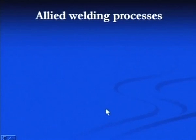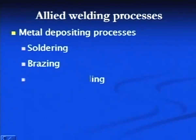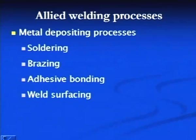Allied welding processes are those in which either a joint is produced or some sort of layer is developed at the surface to protect it from the environment or from wear and tear. These include metal depositing processes, soldering, brazing, adhesive bonding, weld surfacing, and metal spraying.